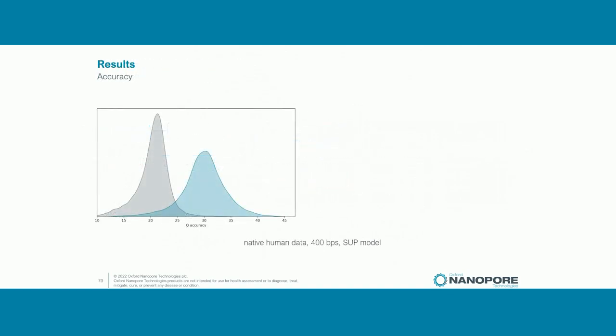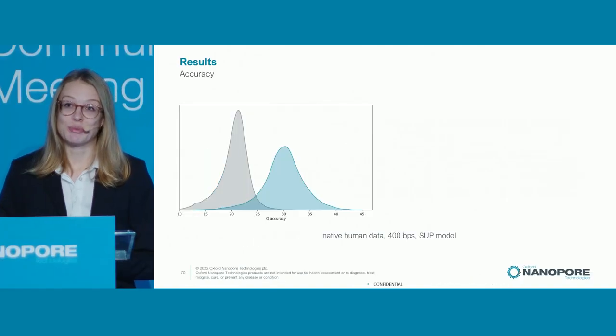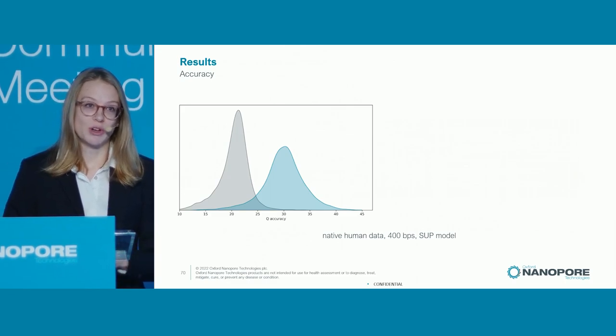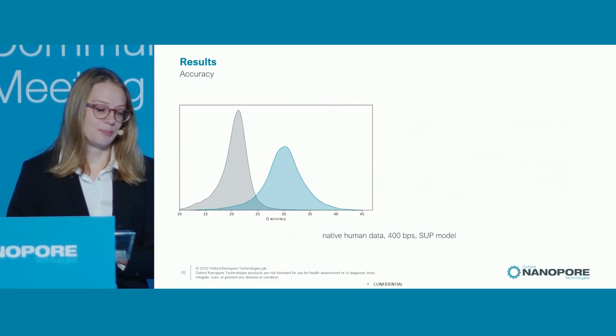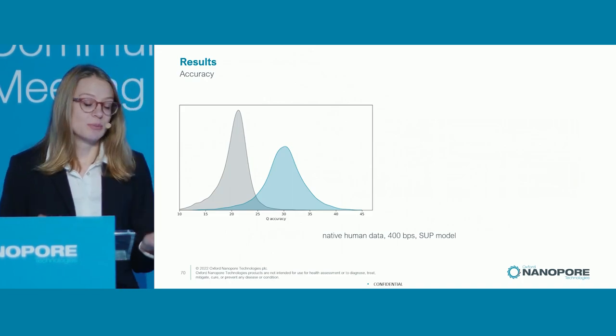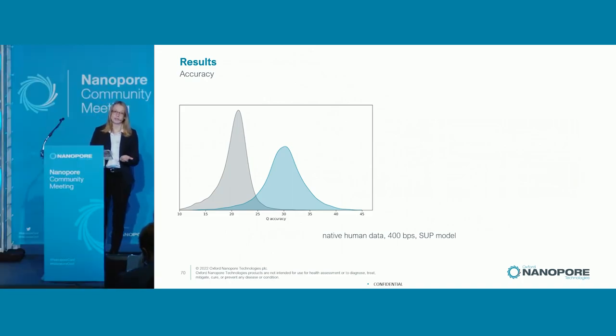Speaking of accuracy, what does it look like? Here I'm showing a representative example of native human data base called with the SUB model in the first stage. The gray histogram shows the simplex quality scores, and blue shows those same reads rebase called with duplex. This is the order of magnitude improvement I was mentioning — moving from Q20 or 99% accuracy to Q30 or 99.9%. And importantly, this improvement in accuracy is consistent across different conditions as well as across read lengths.